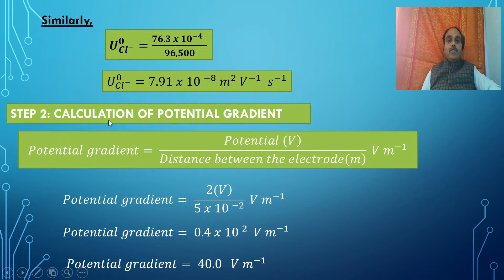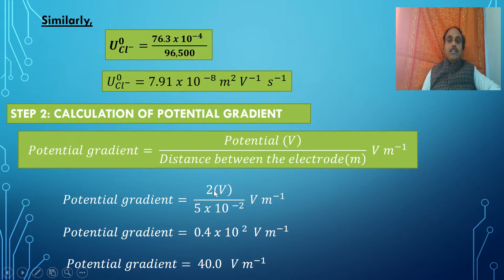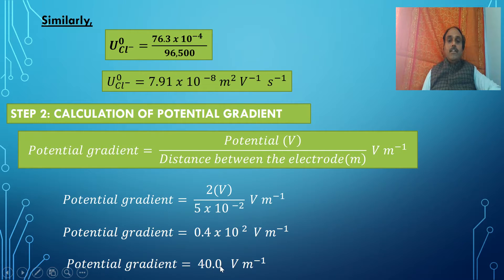Step 2 is the calculation of the potential gradient. The potential given is 2 volts and the distance between the electrodes is 5 centimeters, so the potential gradient is 2 divided by 5 × 10⁻² meter, giving 40 volt per meter.